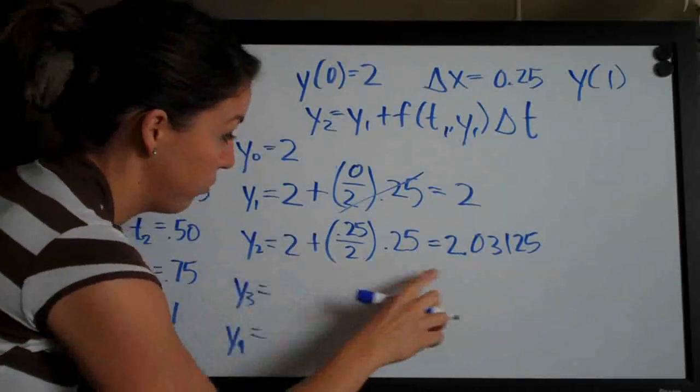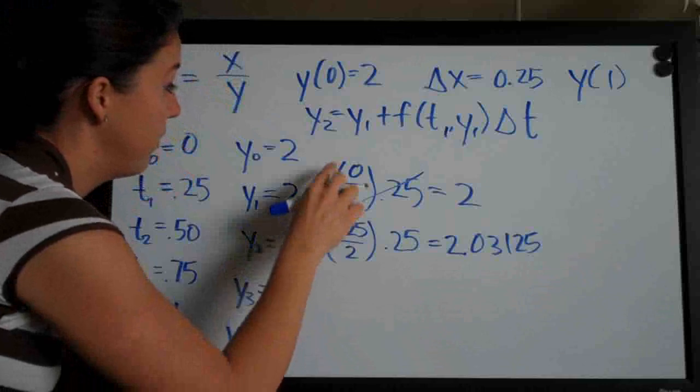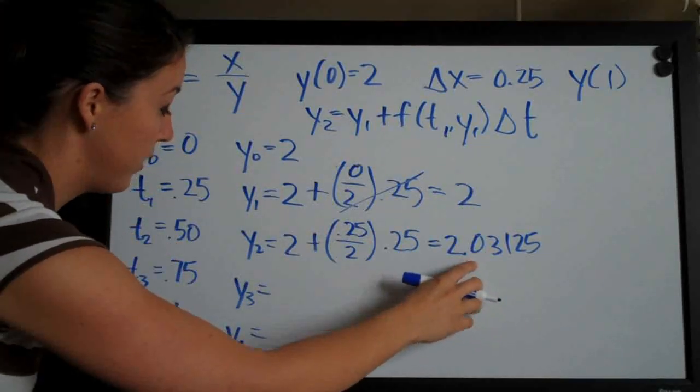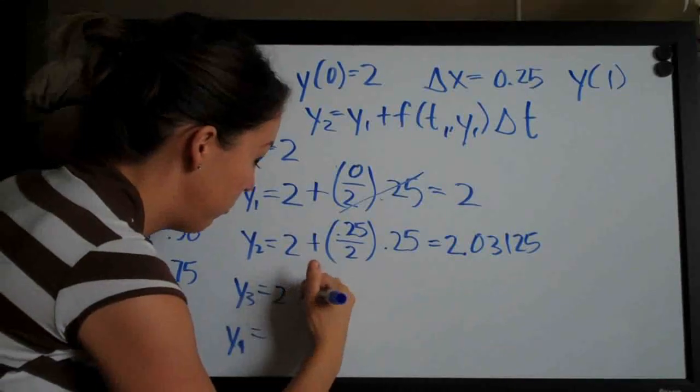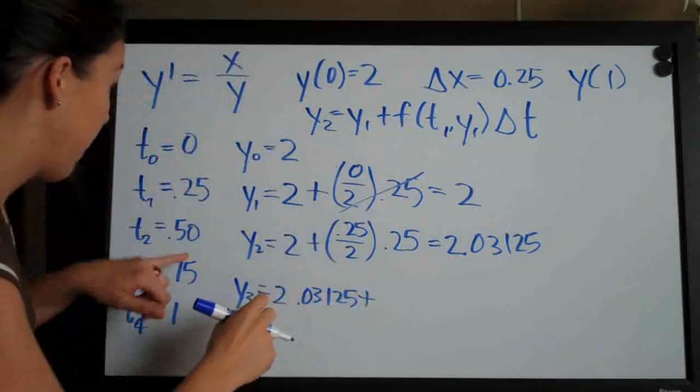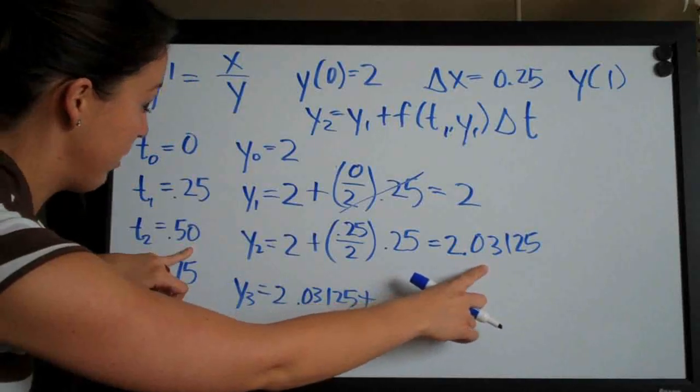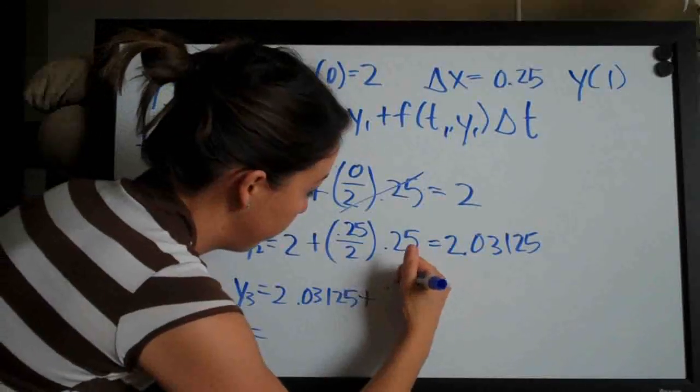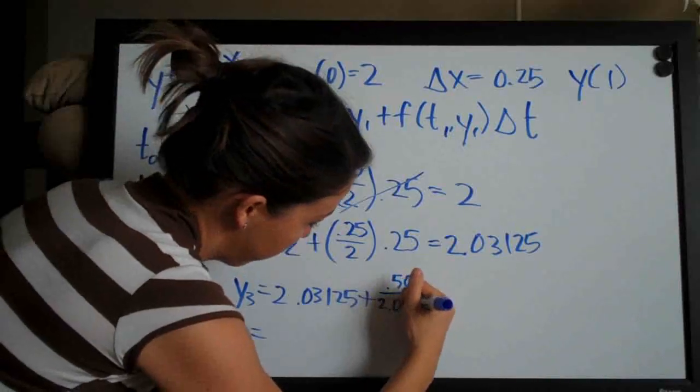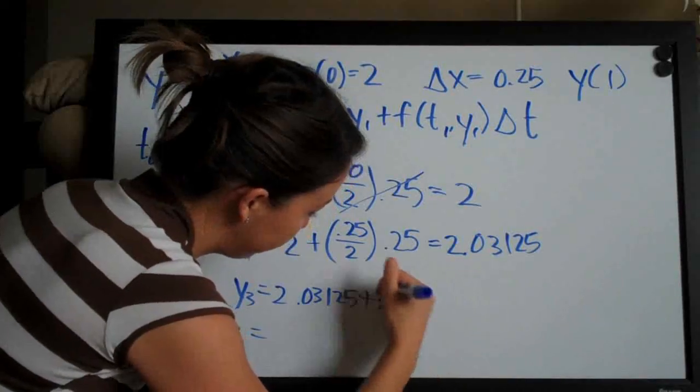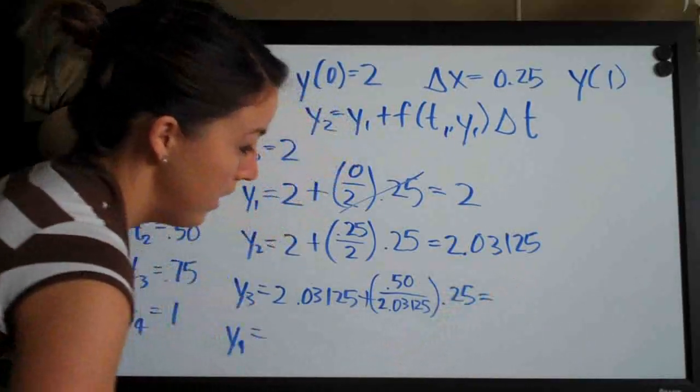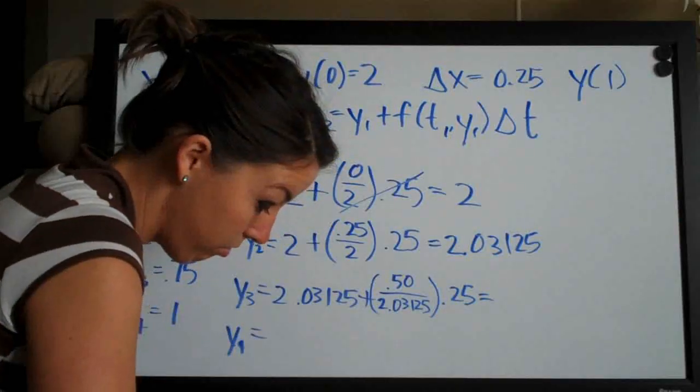Okay, so now that we have this, we can really start rolling. Again, adding one to each, but basically the pattern we're starting to see is you use the previous answer here first - 2.03125 - plus and then the two previous values again. So 0.50 over 2.03125, and we're multiplying by 0.25. And when you do the math there, you get 2.092788.